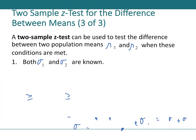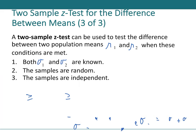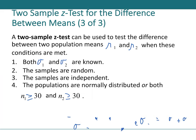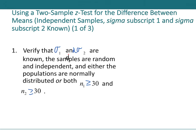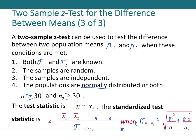The two-sample z-test addresses questions about two population means: are they the same, or is one greater or less than the other? Checklist: large sample sizes (n ≥ 30) or both normal. The standardized test statistic is z = (x̄₁ - x̄₂) / σ, zeroing out the second numerator term.